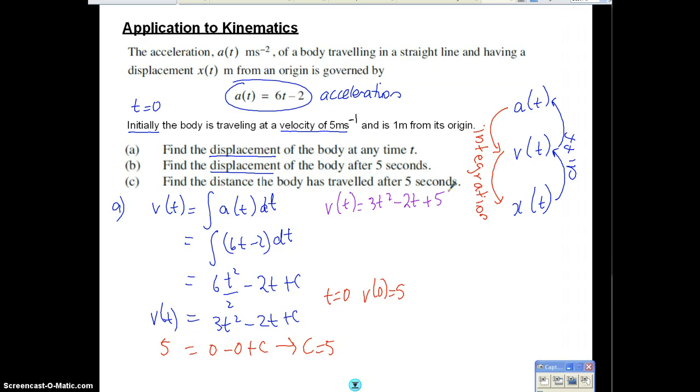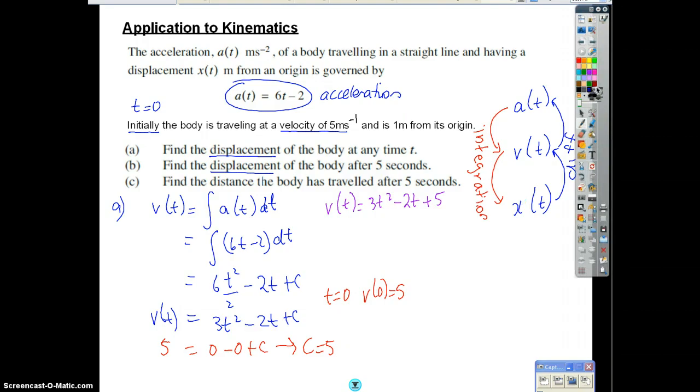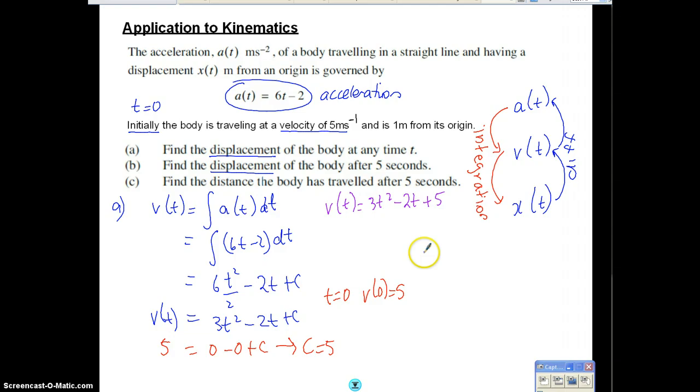Well, we've got the velocity. We've got to go back one more step for our displacement, so let's do that. We know that the displacement, x(t), is equal to the integral of our velocity. So let's put that down. The integral of 3t squared minus 2t plus 5 with respect to t. That should be a pretty nice integral there. We've got t cubed minus t squared plus 5t plus c. Once again, we've got our constant of integration.